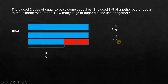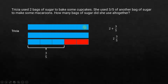This is considered a mixed number because we are writing a whole number and a fraction together. This is called a mixed number, but it is a correct answer — she used 2 and 3/5 bags of sugar.